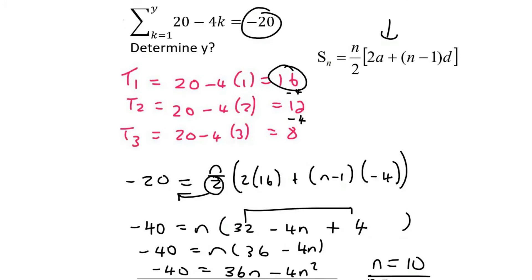Now be careful. n is your number of terms. That won't always be the same as this number over here. To make sure, you always have to remember that this number, or the number of terms, is equal to the top number, which is y, minus the bottom number, which is 1, plus 1.